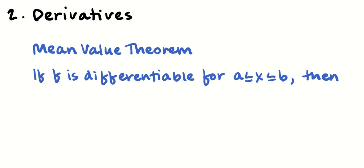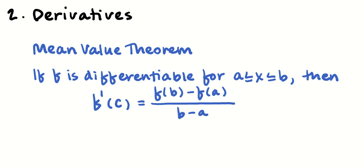The last thing to know about derivatives is the Mean Value Theorem. If a function is differentiable, its average rate of change must equal its instantaneous rate of change at some point in the interval: f′(c) = [f(b) − f(a)] / (b − a) for some c between a and b. A specialized case is Rolle's Theorem, where if f(a) = f(b), there must be a horizontal tangent somewhere in the interval.